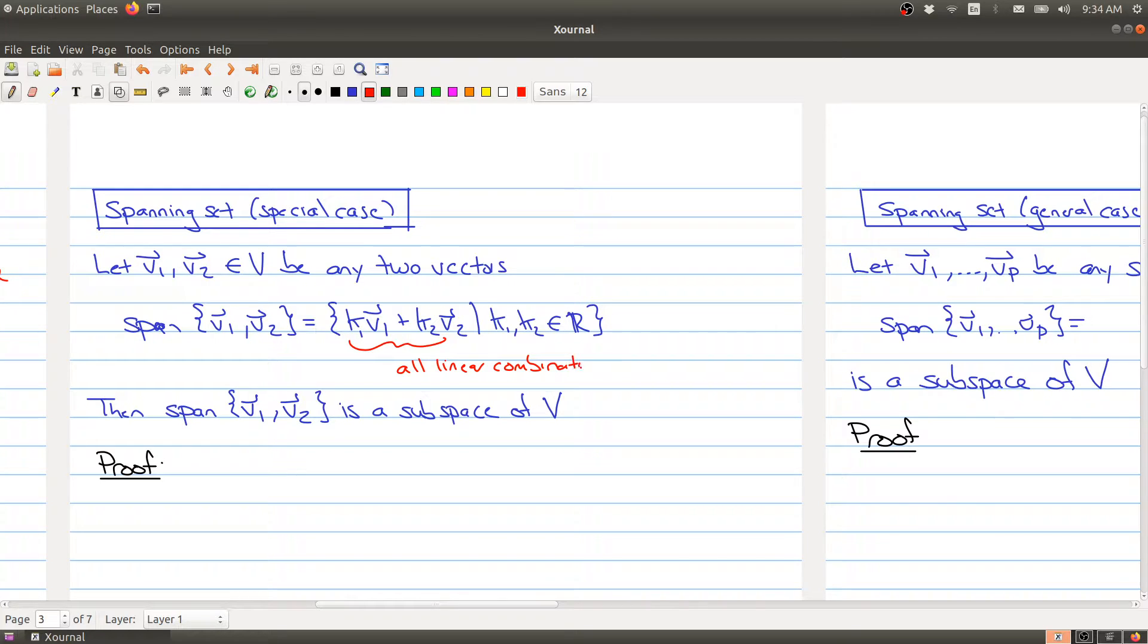So we're going to do all linear combinations of V1 and V2. So K1 and K2 are constants, we can scale these vectors and then add them together. You get a large collection of vectors at the end, you've got a big set here.